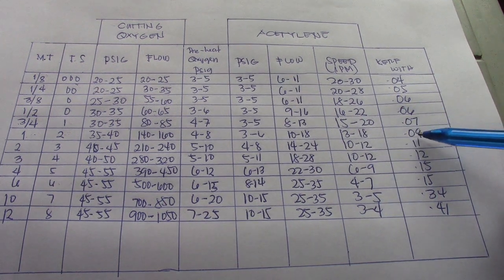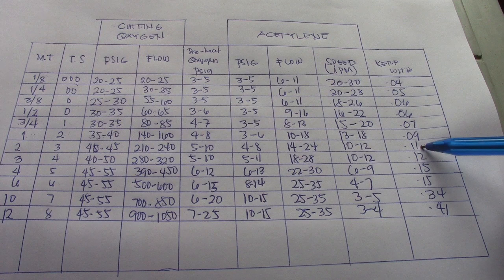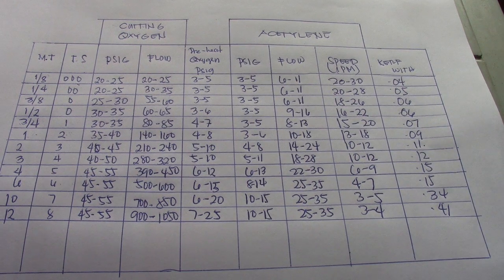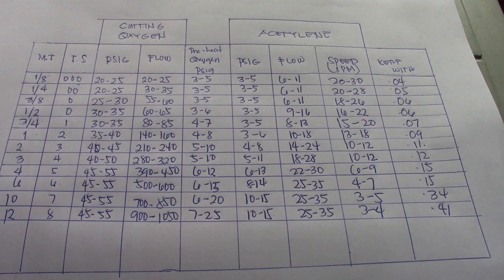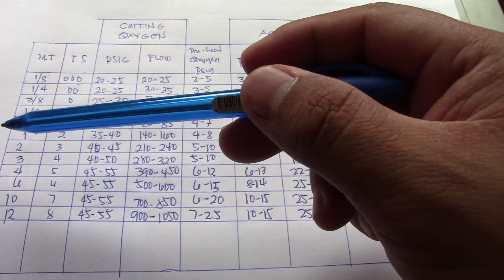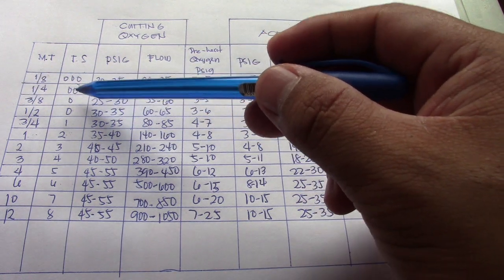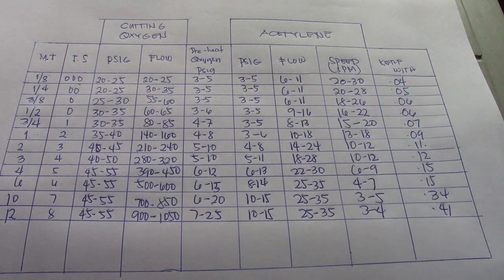The kerf width is 0.11 inches. So this is how to read this table for the cutting oxygen and acetylene. If you want to mix oxygen and acetylene based on the metal thickness, just know the thickness of the metal, follow this procedure, and your cutting will be excellent.